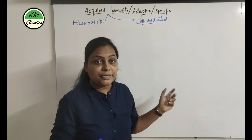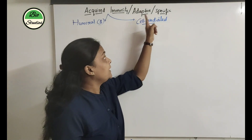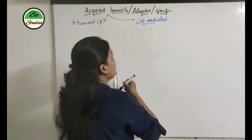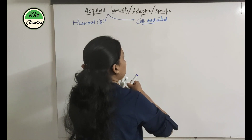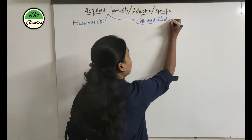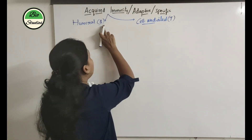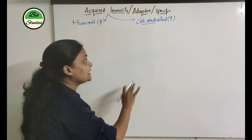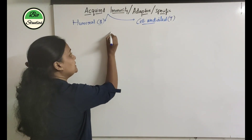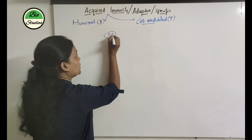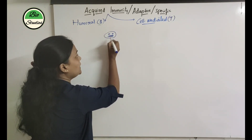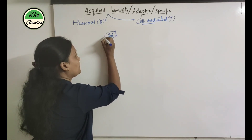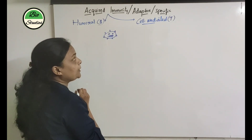Coming to cell-mediated immunity — in this video we will complete cell-mediated immunity. This immunity is mainly provided by T-cells. B-cells are here and T-cells are here. Imagine this is an invading pathogen.